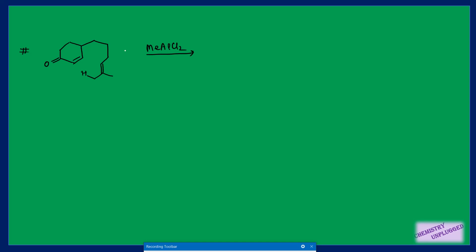The next example is very good for understanding the stereochemistry of the Ene reaction. We identify the ene (with the allylic hydrogen) and the enophile. We label the protons: the one on this carbon as H' and the one on this carbon as H''. The mechanism involves transferring the proton here, shifting this bond, and shifting this one to form a new sigma bond. The ene is delivered to the bottom face of the enophile.